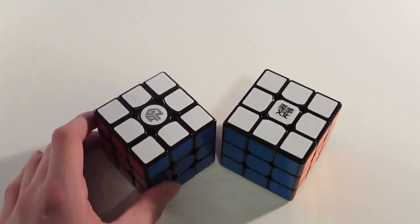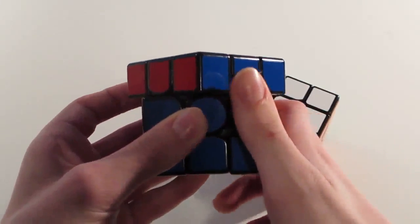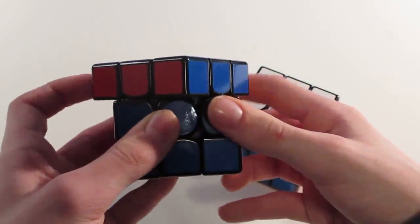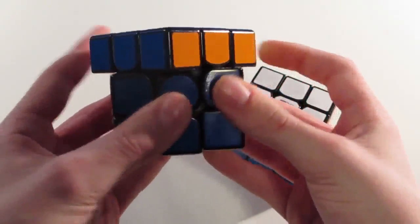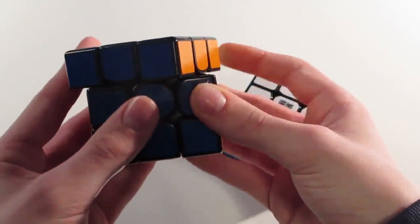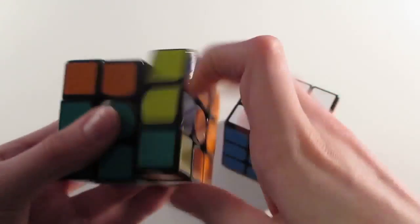For the actual performance of these cubes, let's get on to that. I'll start with corner cutting. Corner cutting on the Gans 356 is way over 45 degrees with no effort. And reverse is way over, well, a little over a piece. And that takes even less effort.